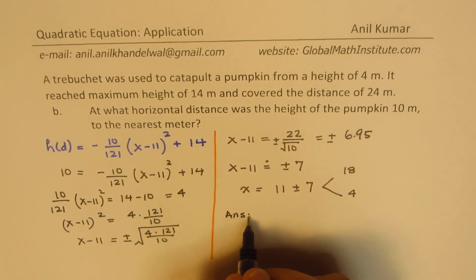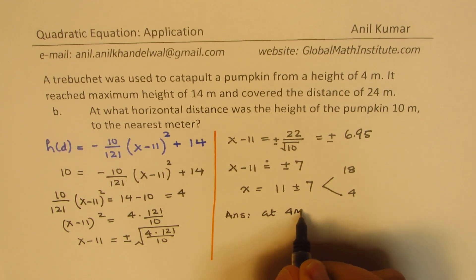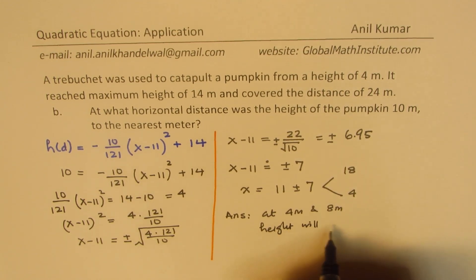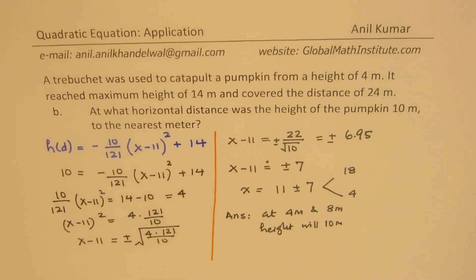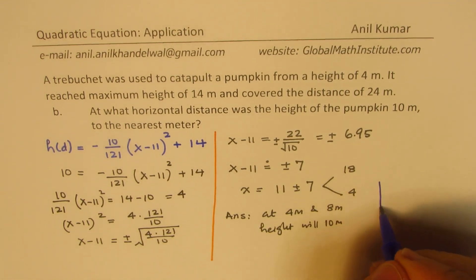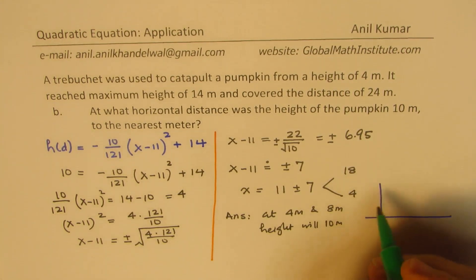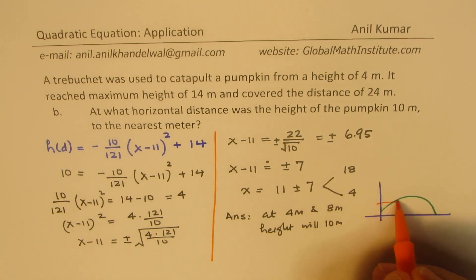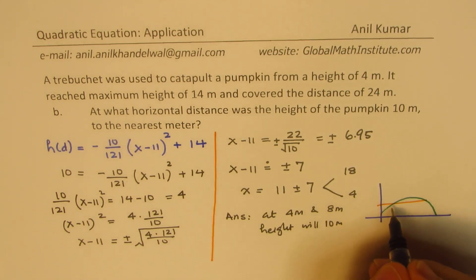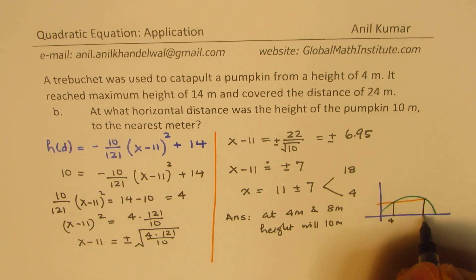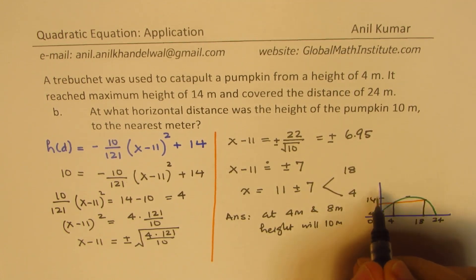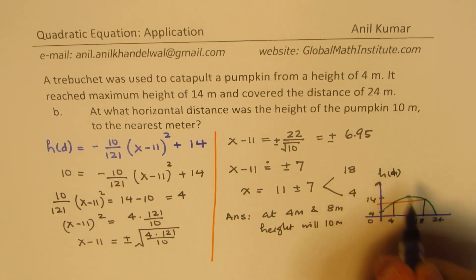So at 4 meters and 18 meters, the height will be 10 meters. As you can visualize, the path is parabolic, the height of 10 is crossed at these two points: at x equals 4 and x equals 18. That is how we solve this particular question.